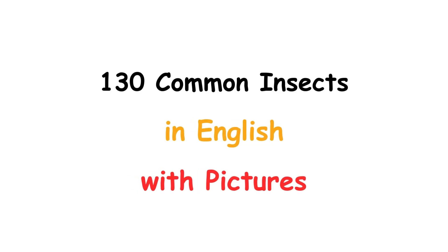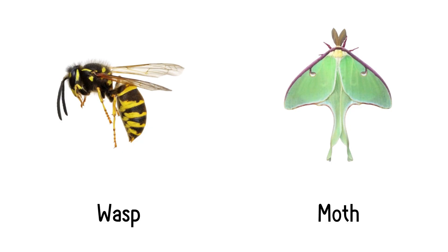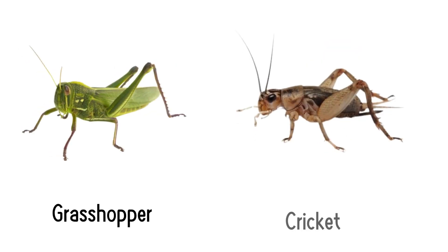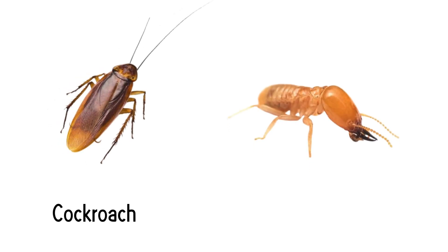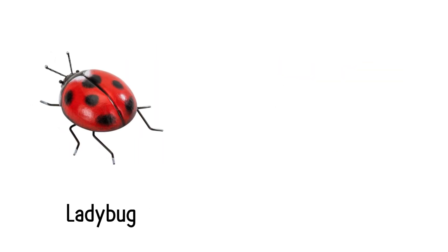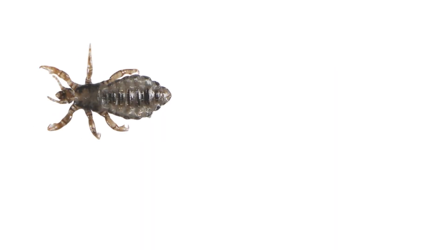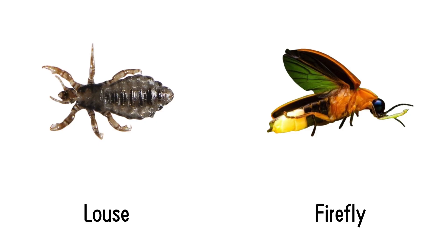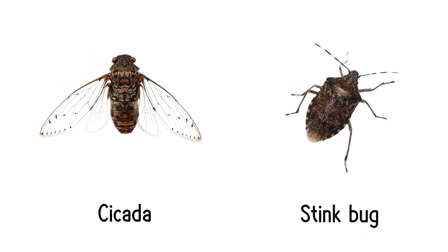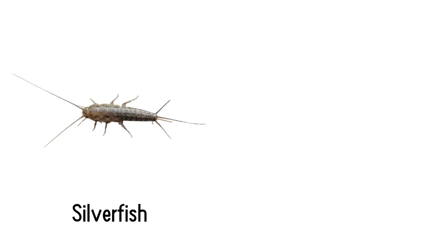130 common insects in English with pictures and: bee, butterfly, beetle, wasp, moth, grasshopper, cricket, cockroach, termite, dragonfly, damselfly, ladybug, aphid, mosquito, flower louse, firefly, cicada, stinkbug, bedbug, earwig, silverfish, stick insect.